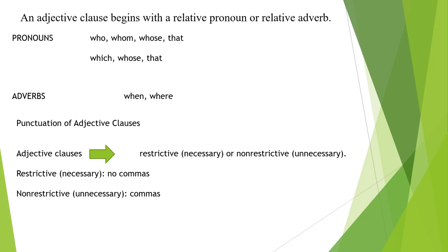However, take care not to use too many adjective clauses. An adjective clause begins with a relative pronoun or relative adverb. Pronouns who, whom, and whose refer to people. Adverbs when and where refer to a time or a place. To avoid confusion, an adjective clause should come right after its antecedent.